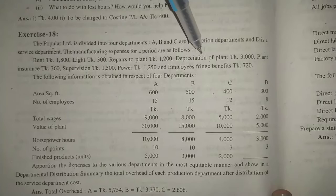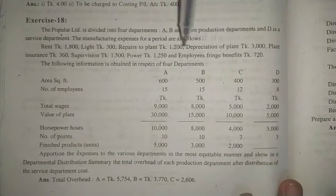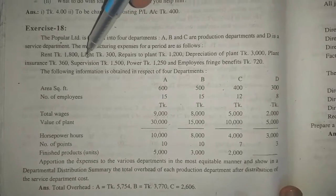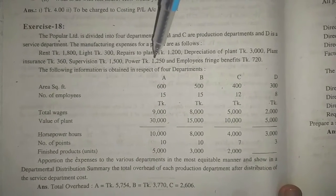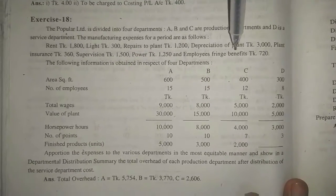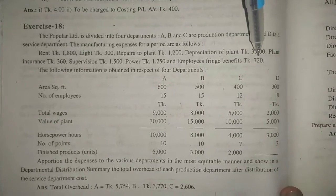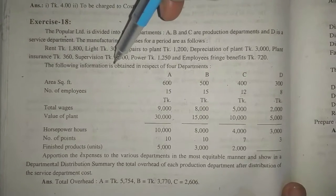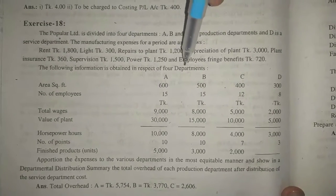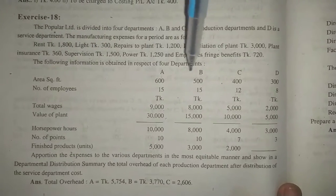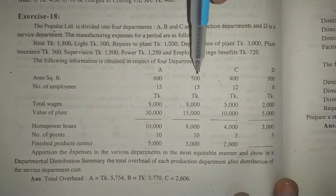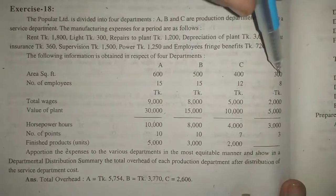The following information is obtained in respect of four departments. Area in square feet: A is 600, B is 500, C is 400, D is 300.